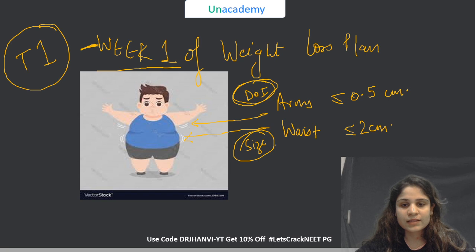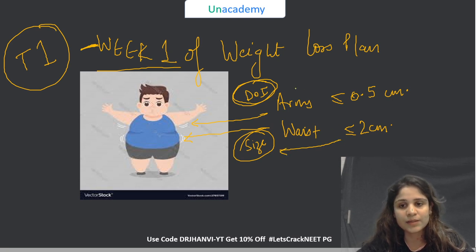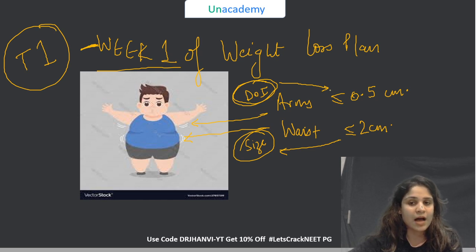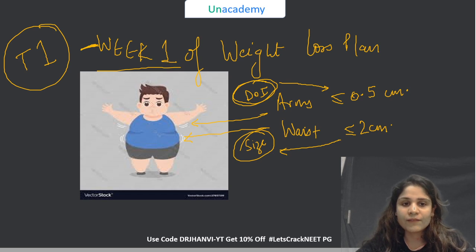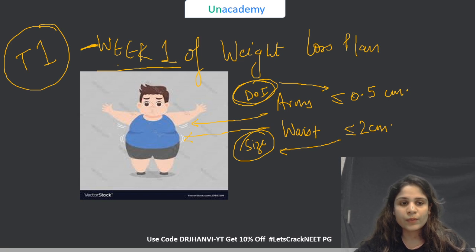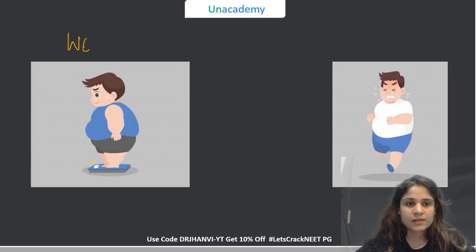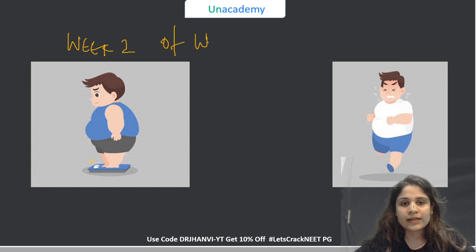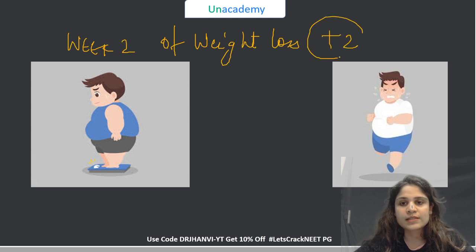If he has lost less than or equal to 2 cm on his waist, that means the tumour size in T1 should be less than or equal to 2 cm. And the depth of invasion is less than or equal to 0.5 cm — that is the weight loss on his arms in week 1. That is category T1. Now we move on to week 2 of weight loss, which will represent our T2 classification.